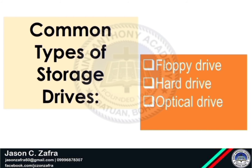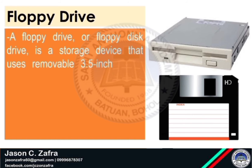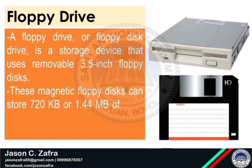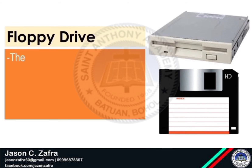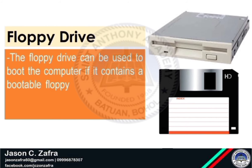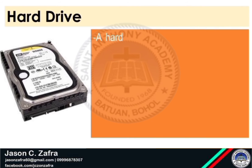These are the common types of storage drives: floppy drive, hard drive, optical drive, and flash drives. A floppy drive or floppy disk drive is a storage device that uses removable 3.5-inch floppy disks. This magnetic floppy disk can store 720 kilobytes or 1.44 MB of data. The floppy drive can be used to boot the computer if it contains a bootable floppy disk. A 5.25-inch floppy drive is older technology and is seldom used — wala na kayo na siya gigamit, karaan na kayo.